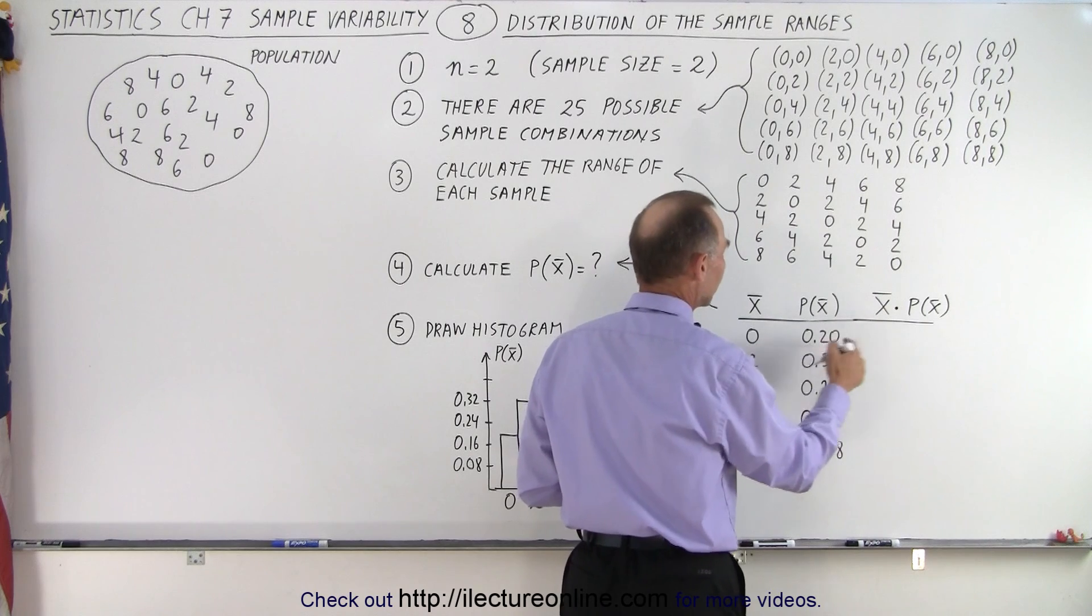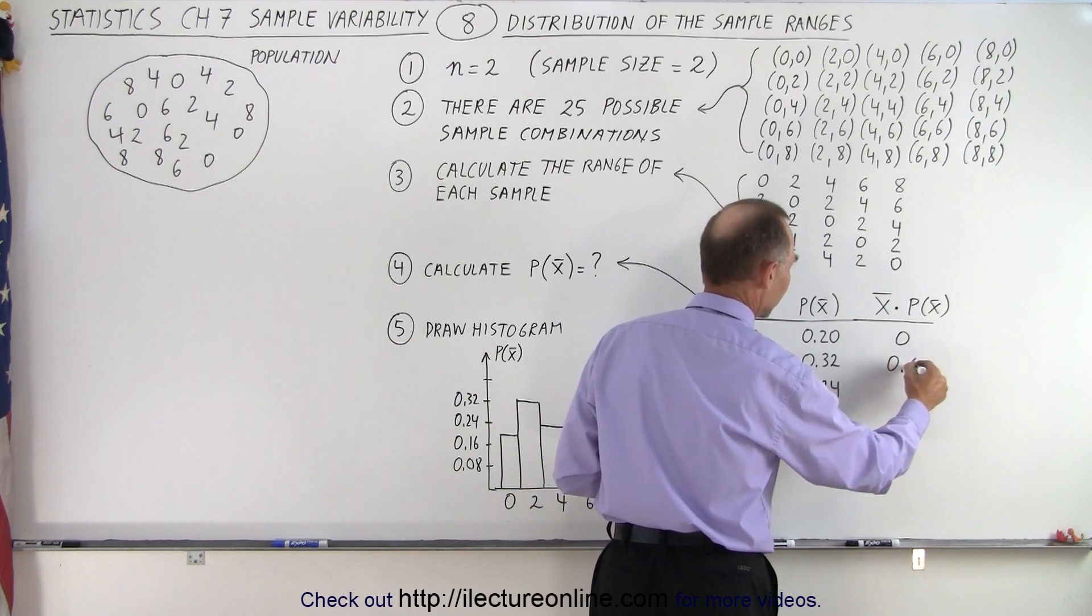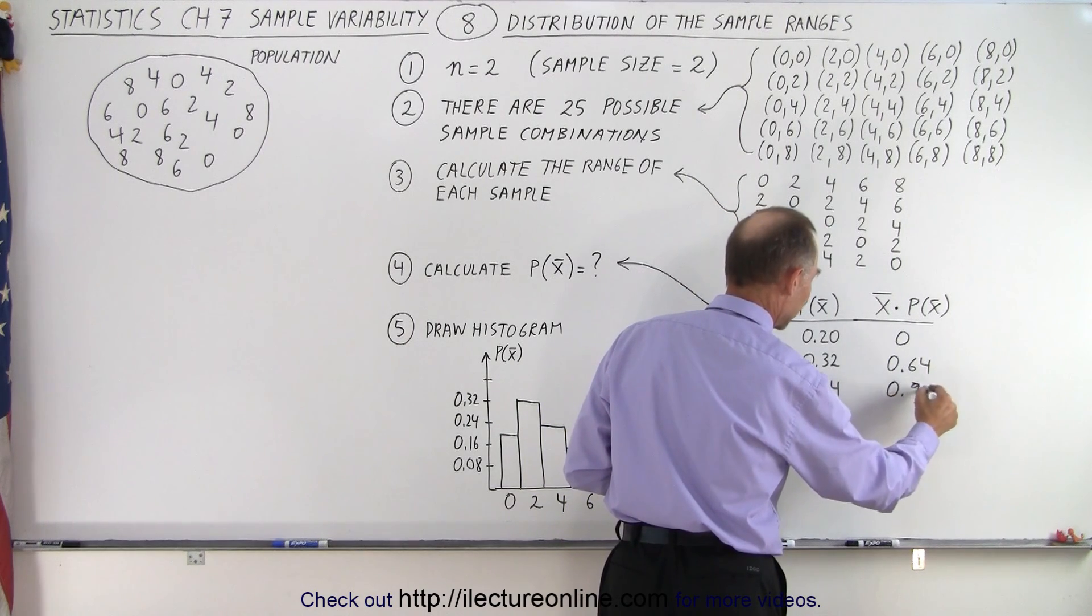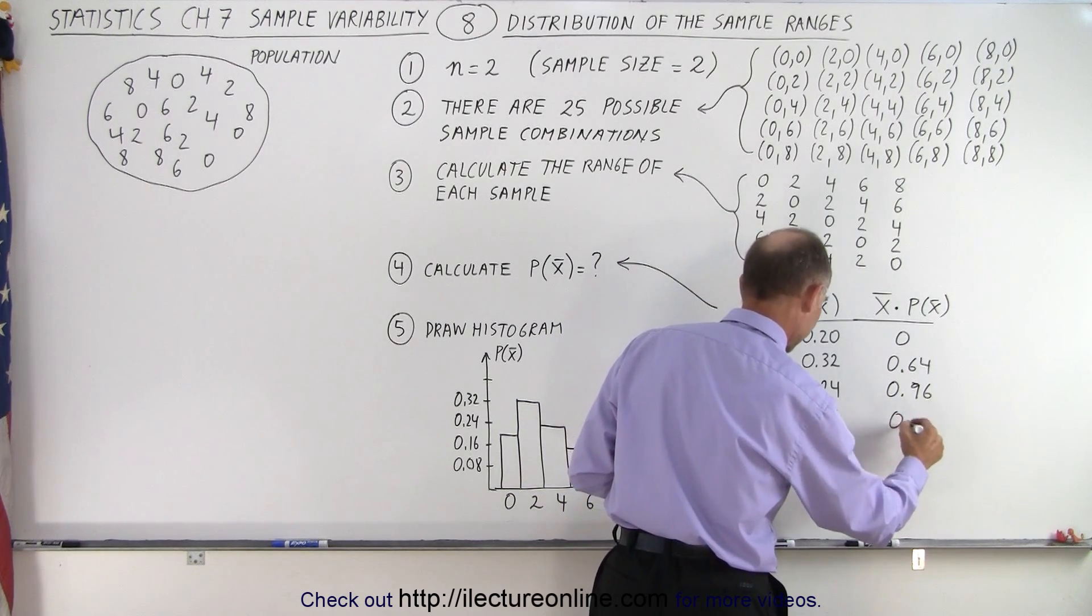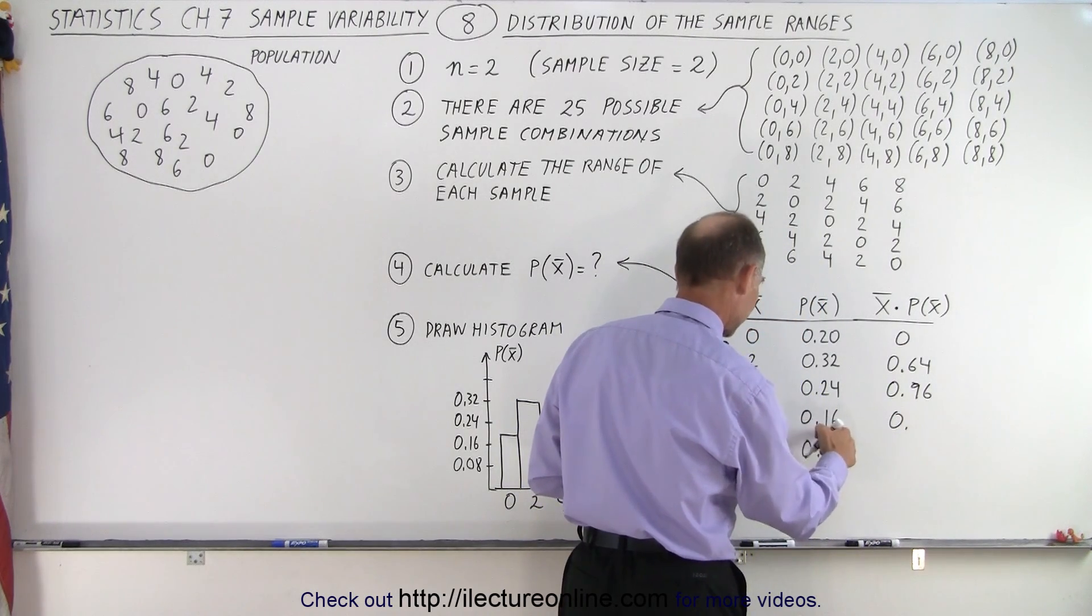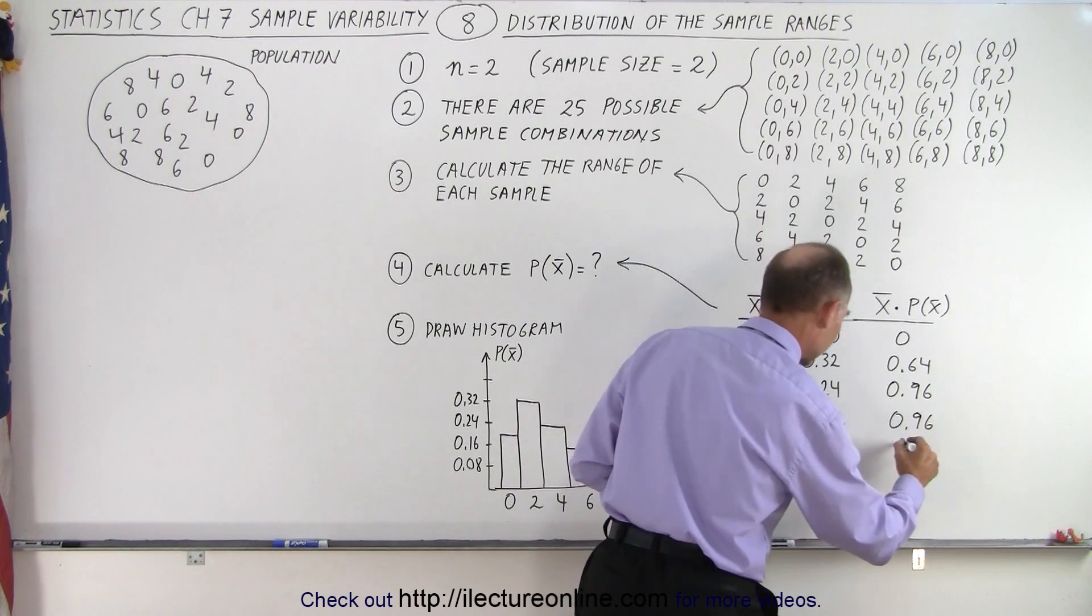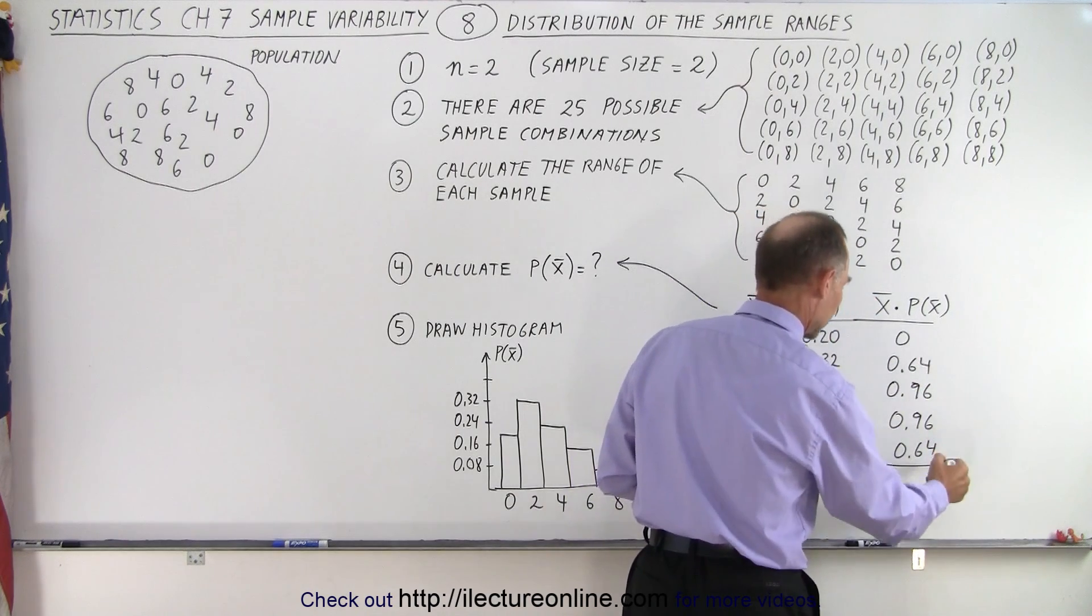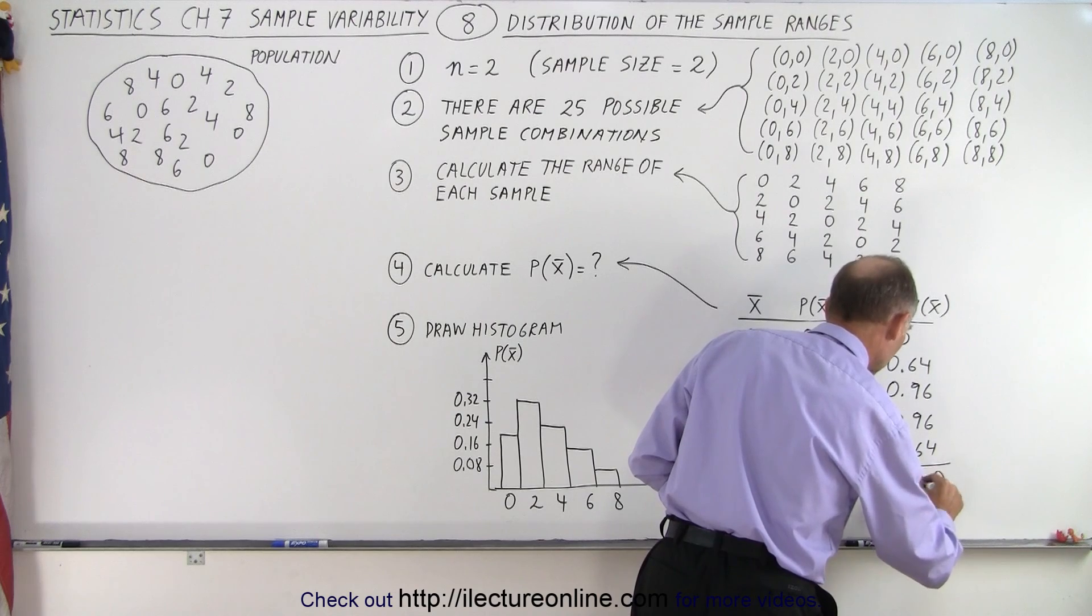And when we do that we get 0 right here. Here we get 0.64. Here we get 0.96. Here we get 0.96 again. And here we get 0.64. When we add them together we get 0, 2, that's 20, that's 3.20.